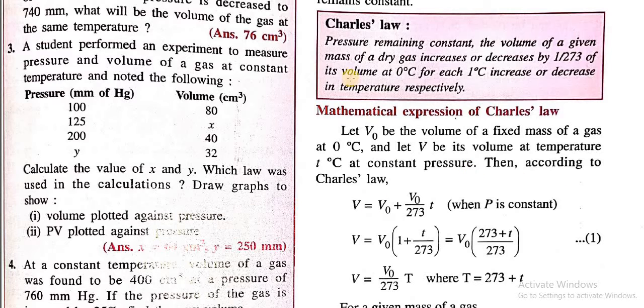Then according to Charles's Law, from this statement, we can write that final volume V equals initial volume V₀ plus V₀/273 times T. That is this one.